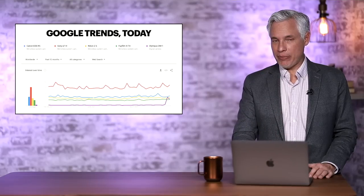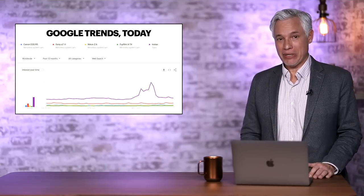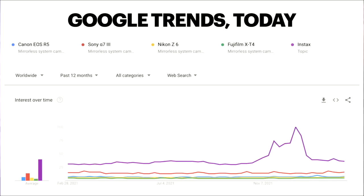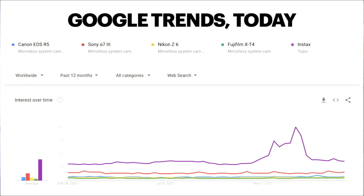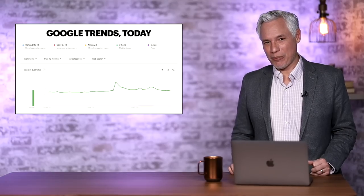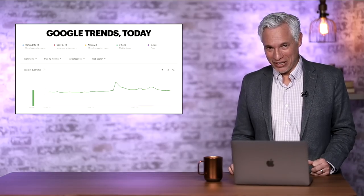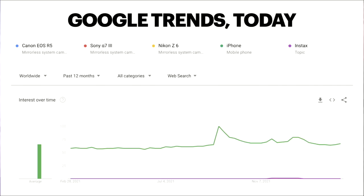Here's another chart. Remember I mentioned the popularity of those Fujifilm Instax cameras? If I plug Instax into this, you can see the line goes up so high that it dwarfs everything else, including the a7 III. But what about the most popular camera in the world? The iPhone. When I put that search in and compare it to the others, you literally cannot see the lines anymore. The market share simply disappears.